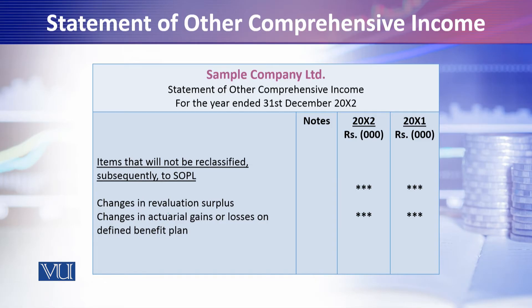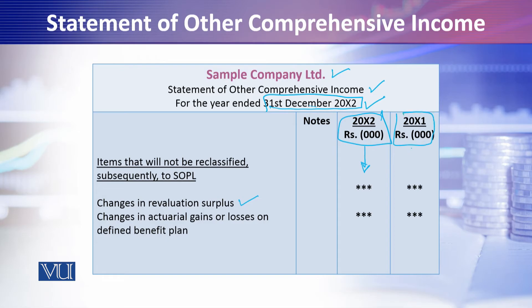These are two items. Number one is changes in revaluation surplus. Now, the way we are building this statement — 'Sample Company' is the name of the company, and 'statement of other comprehensive income' is the title of the statement we are preparing, with the reporting period shown. Here we are placing current year information — the reporting year — and this is the comparative year. Notes reference is also included. Changes in revaluation surplus.